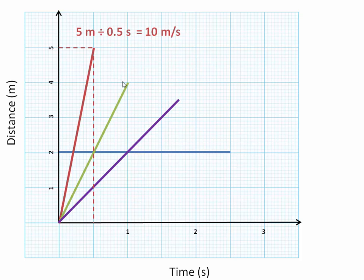OK, let's get started. On the green line, we've got the distance travelled, which is 4 metres, and the time that it took, which is 1 second. So 4 divided by 1 is 4 metres per second.